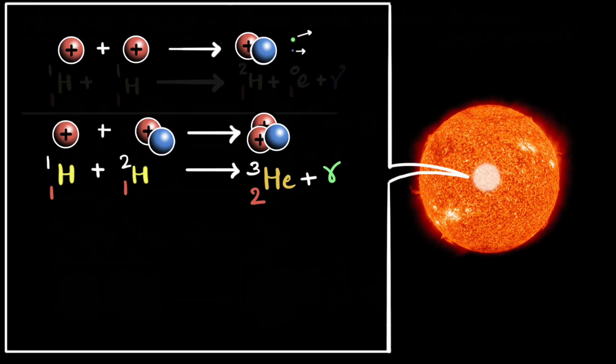And if you write the equation for this, it's going to look like this. You have two protons, hydrogen nuclei, fusing to get a deuterium. And this is the product of the beta decay, which you've seen before. Don't worry too much about it right now. But it will now make sense that in order for a deuterium nucleus to be formed, you'll have to wait a long time.